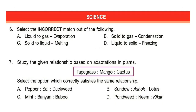Next section is Science. Question 6: Select the incorrect match out of the following. Look at the options and read them carefully. Correct answer is option B — solid to gas: condensation. That is incorrect.